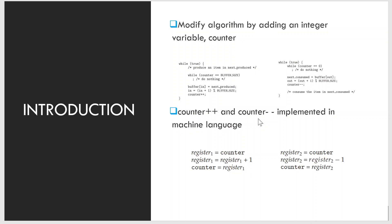The only correct result is counter equal to 5, which is generated correctly if the producer and consumer execute separately. We can show that the value of counter may be incorrect as follows. Note that counter++ and counter-- can be implemented in machine language as shown.